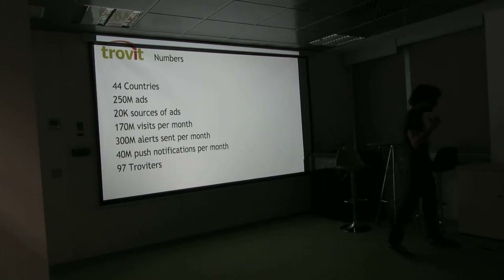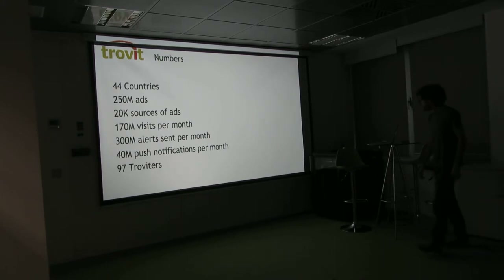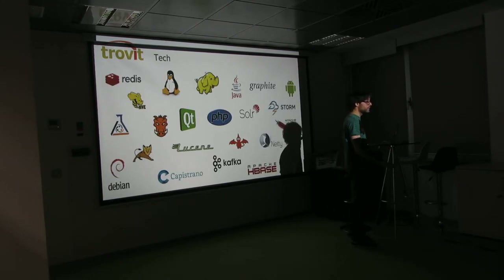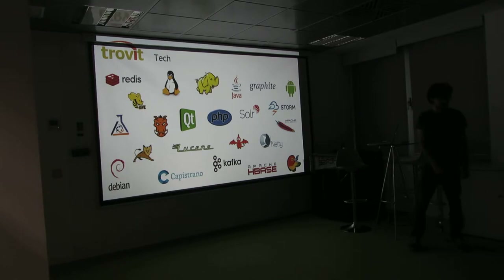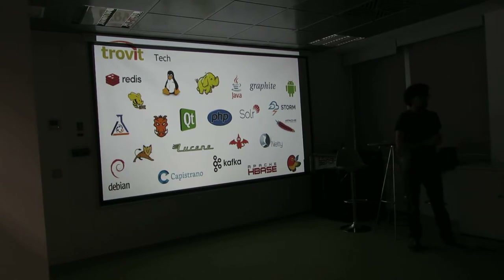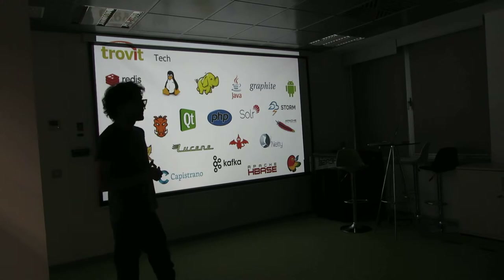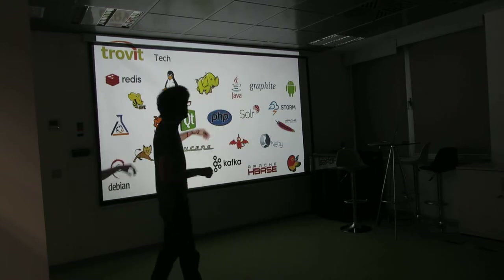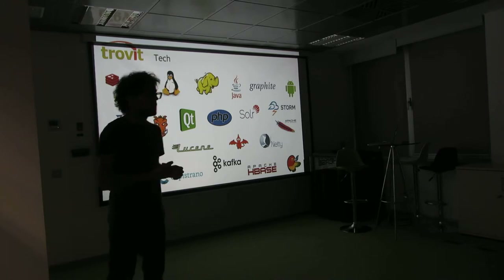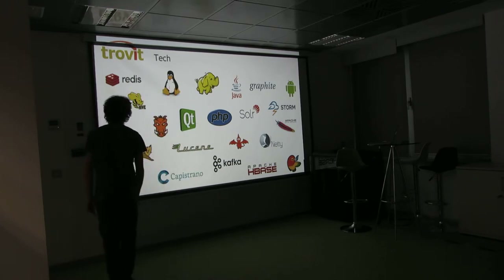But the important part here are the TROBITers, the people that work here at TROBIT — we have 100 right now. For this meet-up, the important part is the technology we host. We use a lot of open-source technology. We have front-end departments focusing on PHP, back-end parts mainly focused on Java, but we also use other technologies, and we have departments for applications and web mobile.